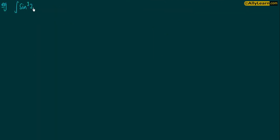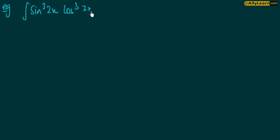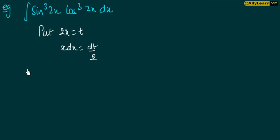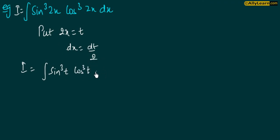Integration of sin³2x · cos³2x dx. तो पहले 2x से निपट लेते हैं. इसके लिए 2x को t put करते हैं, तो dx = dt/2. So this I equals integration of sin³t · cos³t · (dt/2).